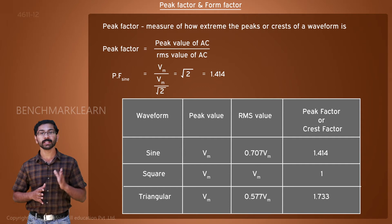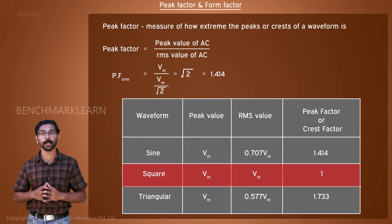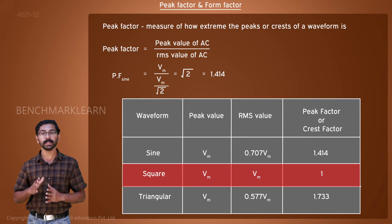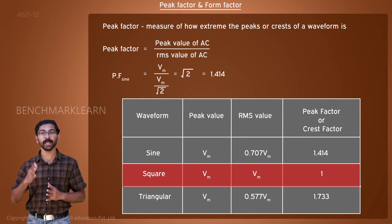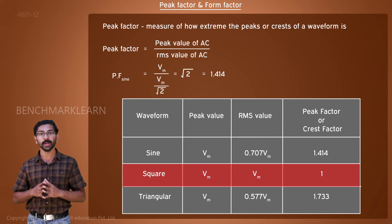In a square wave, the peak value and RMS value are the same, so the peak factor will be 1. A higher value of peak factor indicates that the waveform will have a very high peak.